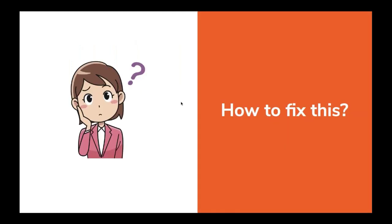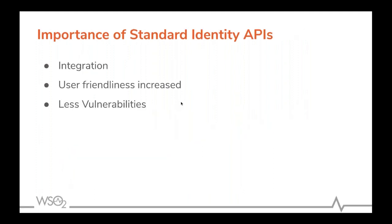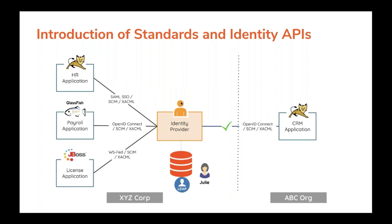They started thinking about what they could do, because this wasn't a simple problem anymore — they had to think at a community level, communicating with third parties and potential partner organizations. What they did was start to accept standard protocols and standard APIs. They started using protocols like SAML, OpenID Connect, and others, and created their APIs according to these standards. Because of this they were able to achieve their main goal: Julie can now log into the CRM application in the ABC organization.